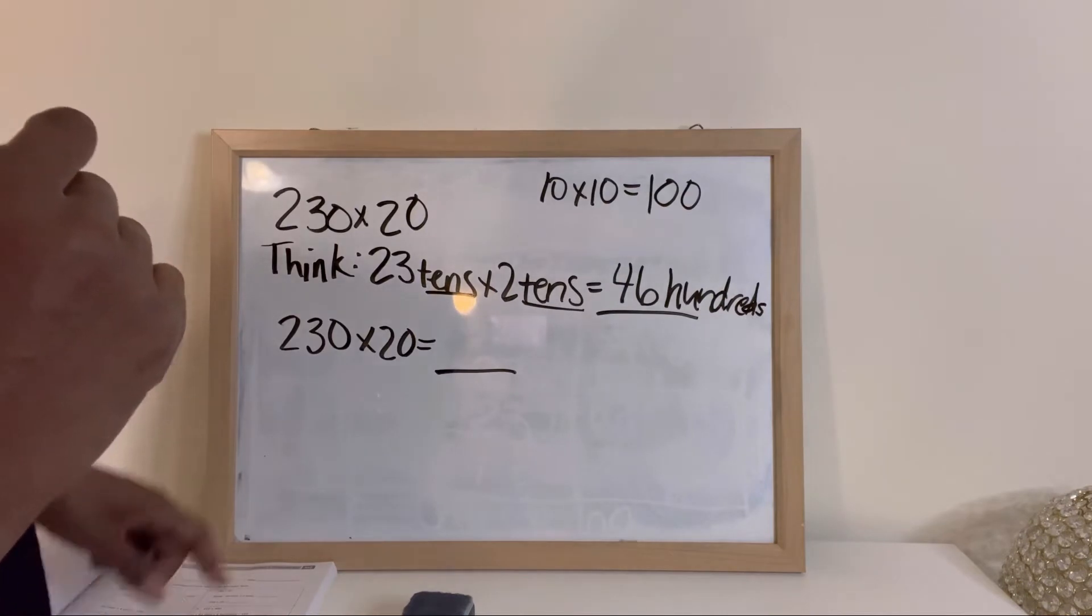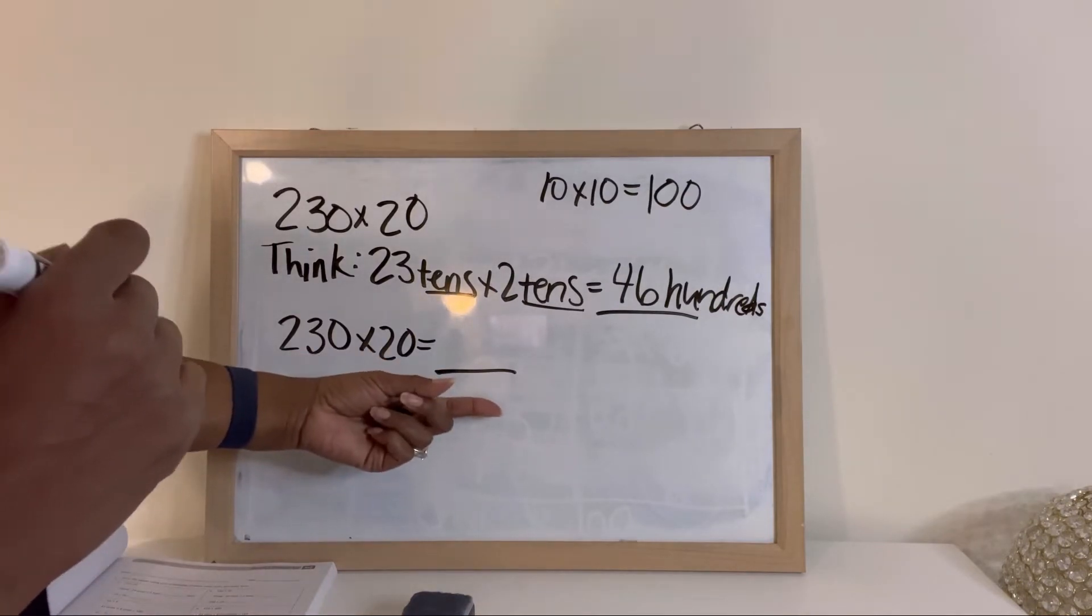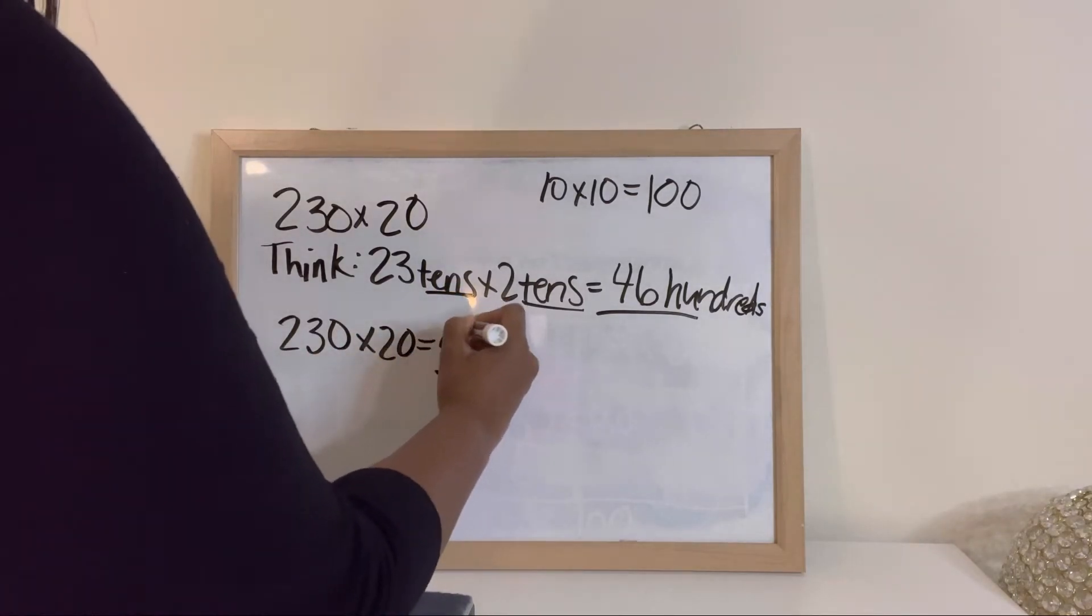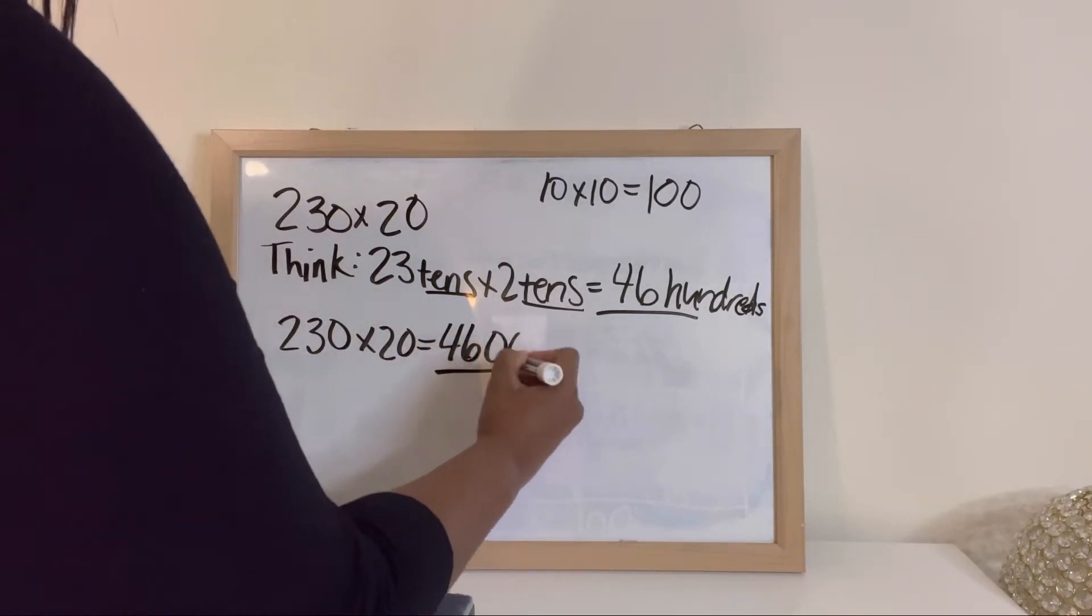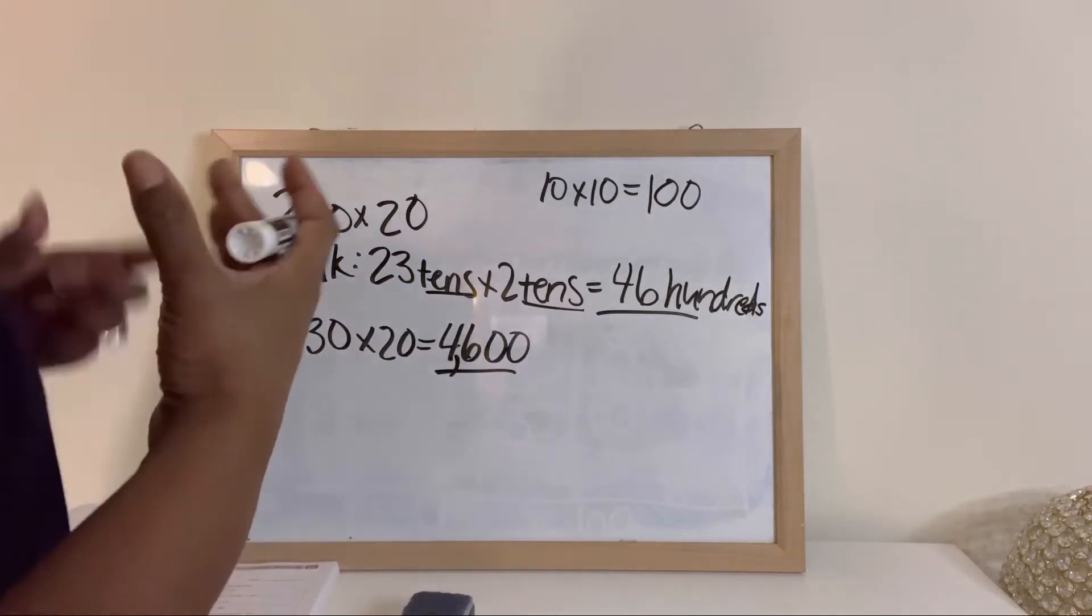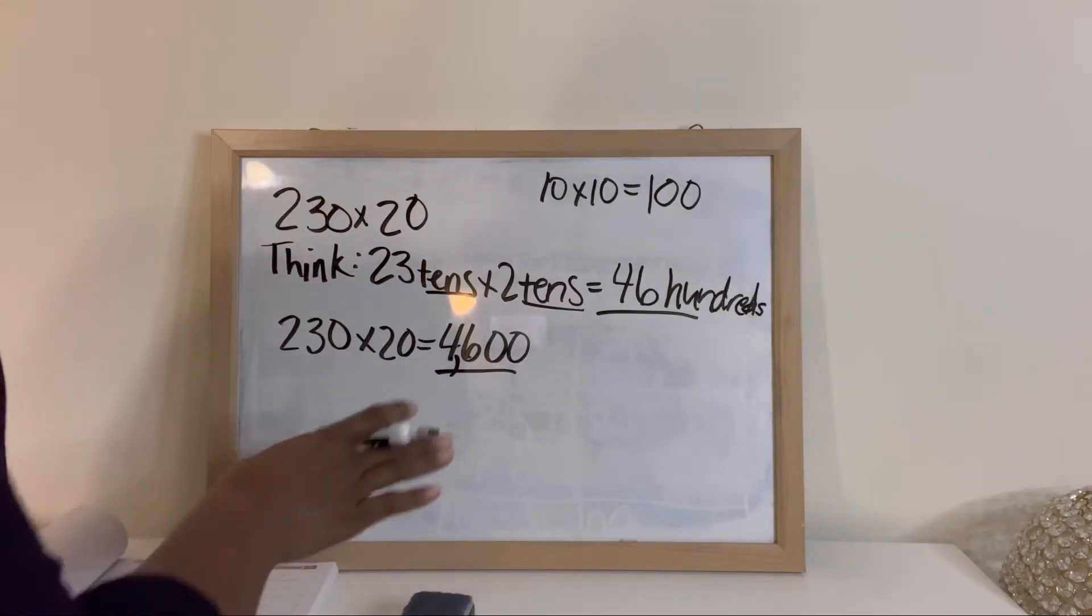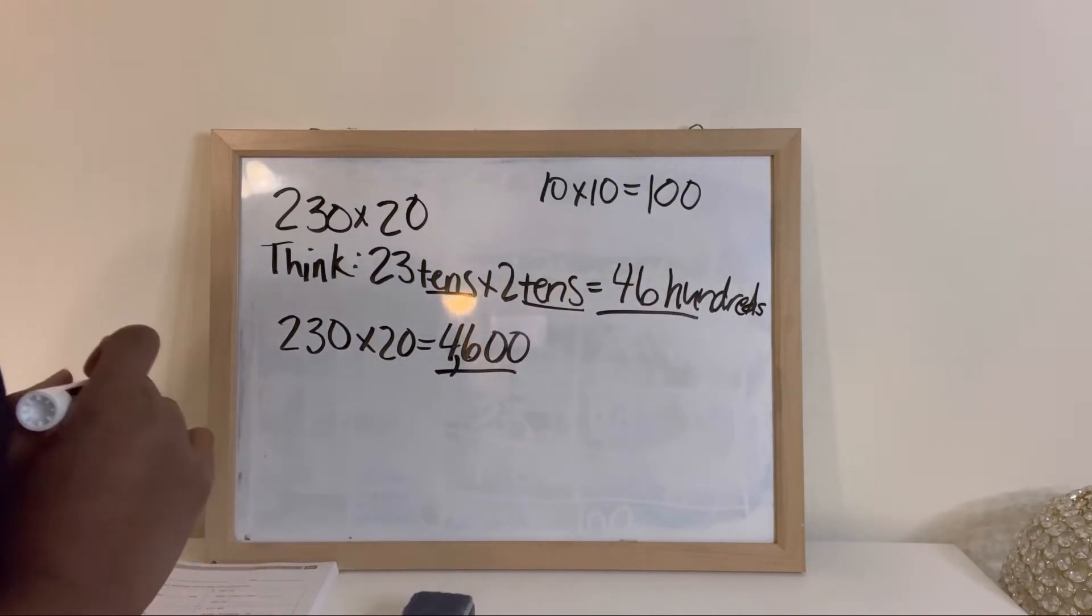And then here you're just gonna show the standard form. So how do we show 4,600? We show 4,600 with two zeros. So remember when we did tens, we showed it with one zero behind our number. But here we're doing hundreds, we're showing it with two zeros.